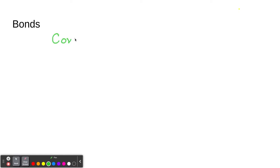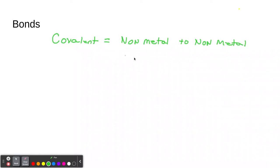The next part is bonds. There are three types of bonds we'll talk about - actually two in this video. First, you can have a covalent bond. Covalent bonds are non-metal to a non-metal. Non-metal to non-metal - that's the bond of covalent. For example, you could take hydrogen, which is a non-metal, and oxygen, a non-metal. So non-metal to non-metal is a covalent bond.